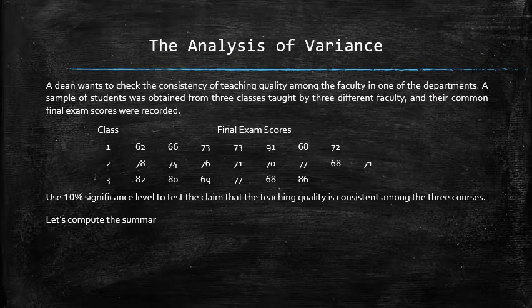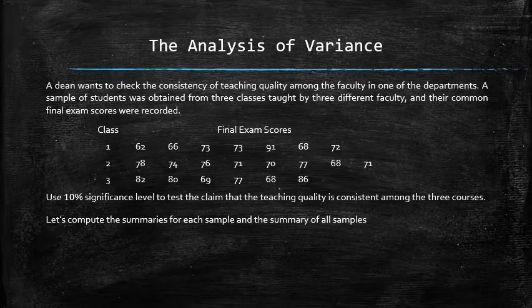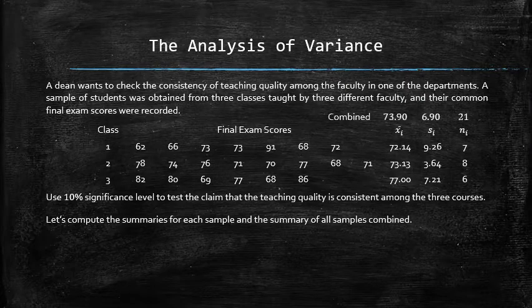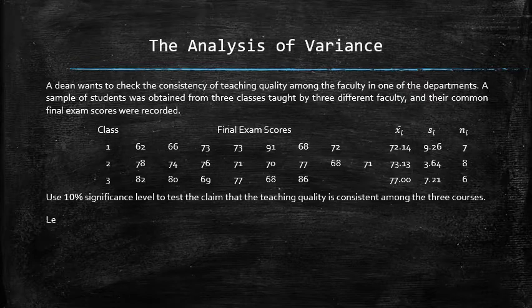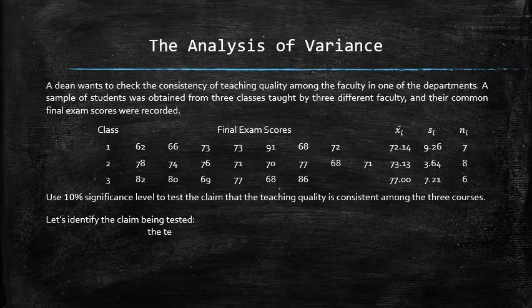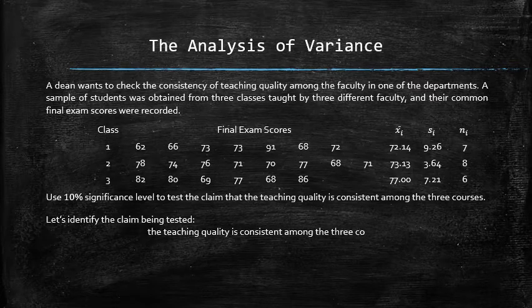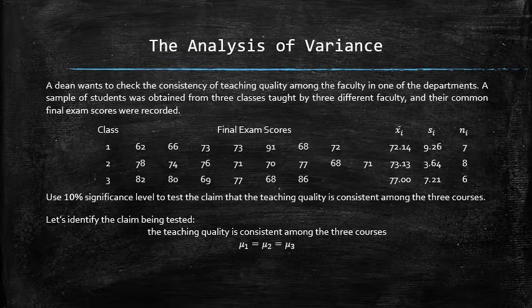Let's compute the summaries for each sample and the summary of all samples combined. Now let's identify the statistical claim that needs to be tested. The claim is that the teaching quality is consistent among the three courses. One way to measure the quality is by the average grade on the common exam. So we are testing the claim that all means are the same. Symbolically, such a claim can be written as mu1 equals mu2 equals mu3.